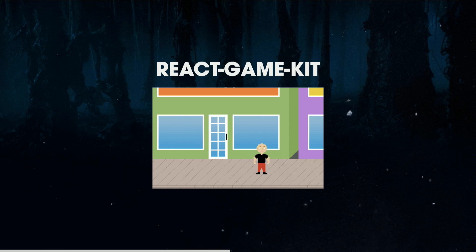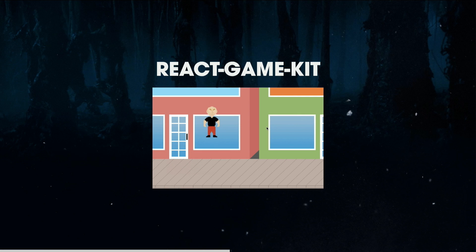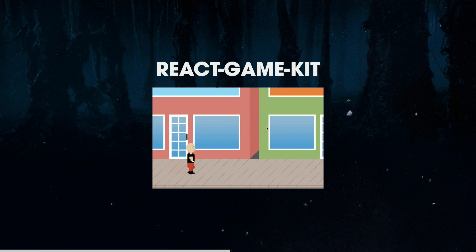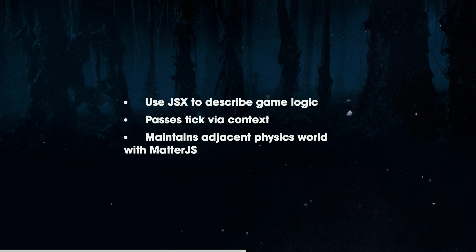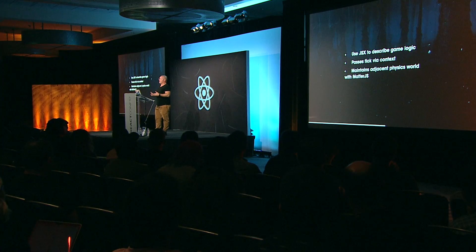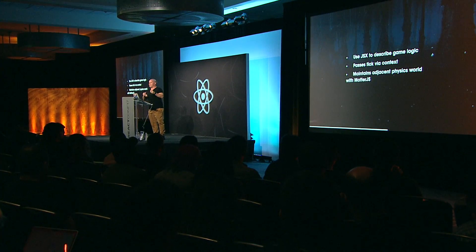This one was cool: React Game Kit. I designed this game — you can see the extraordinarily handsome character. I made it so jacked. It uses JSX to describe game logic. Most game logic is done via a tick, and that timing gets passed down via context. React Game Kit maintains an adjacent physics world with Matter.js, so you let all the physics stuff take place in there, and then anything in your React view that you want to do, it'll just sync up if you connect it.